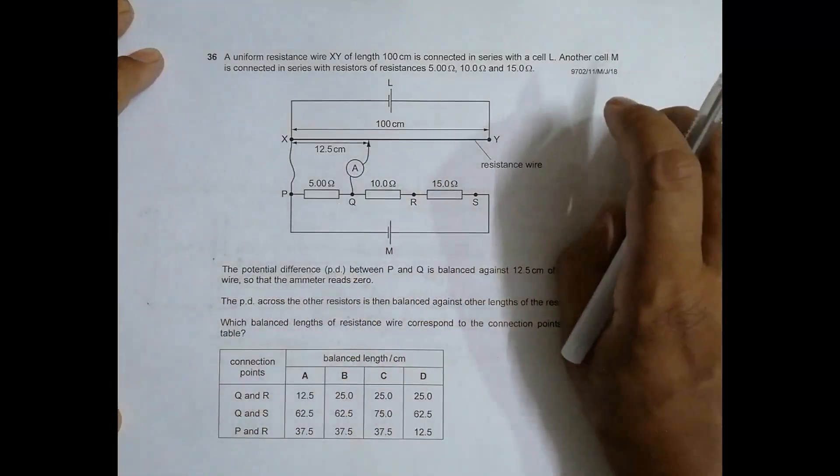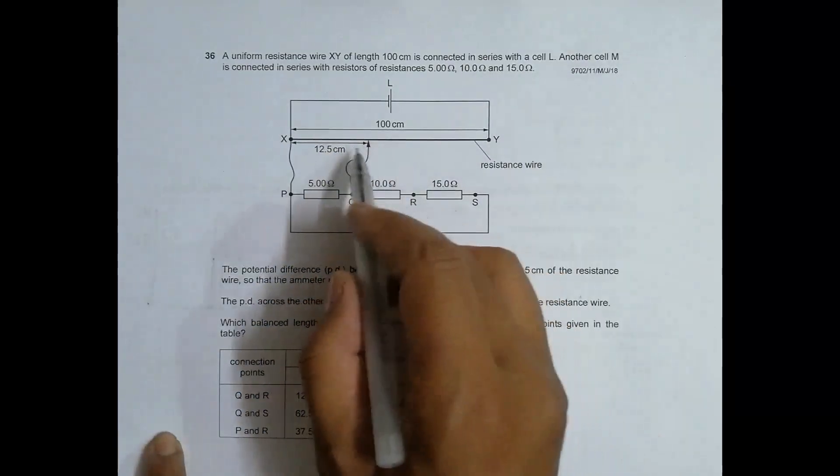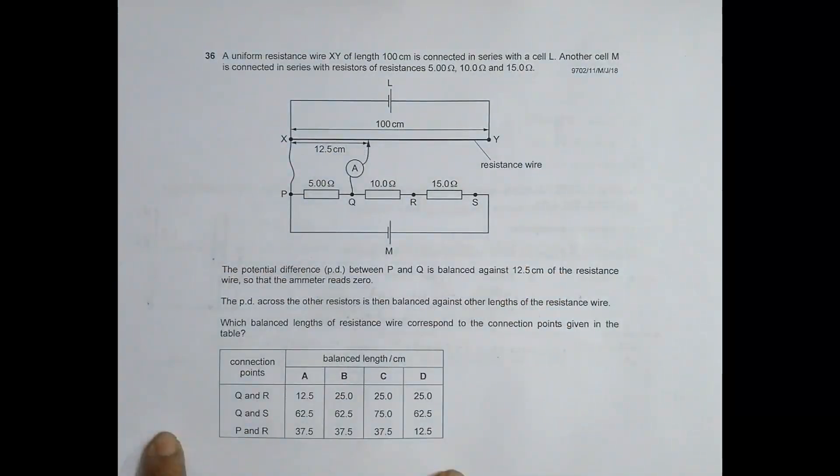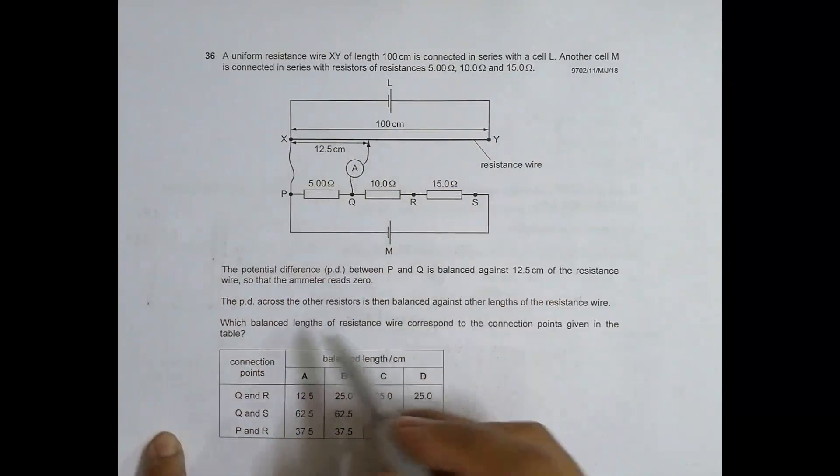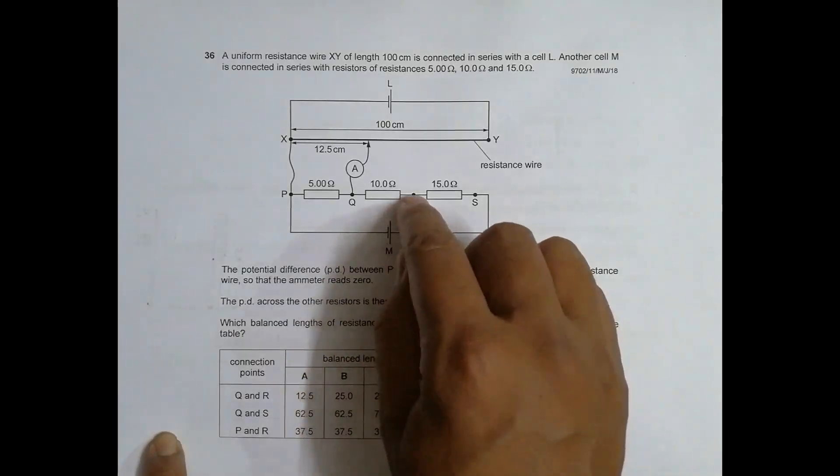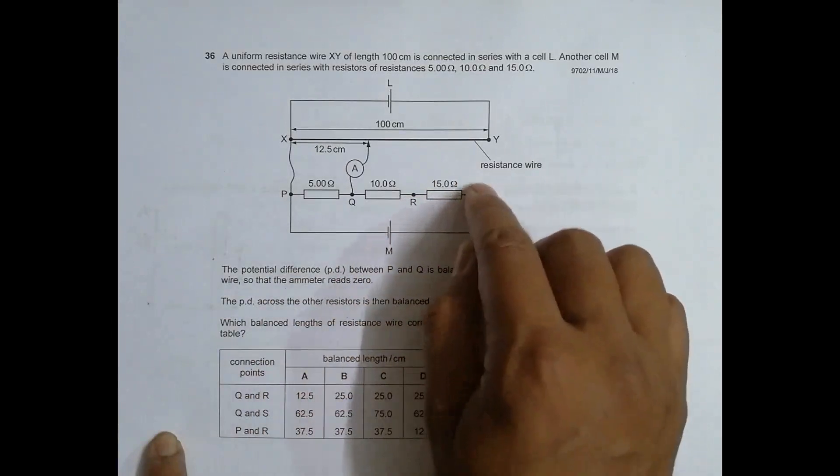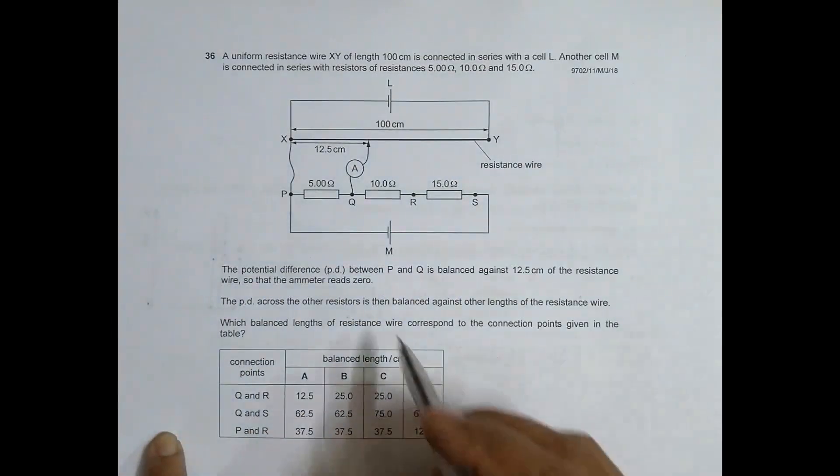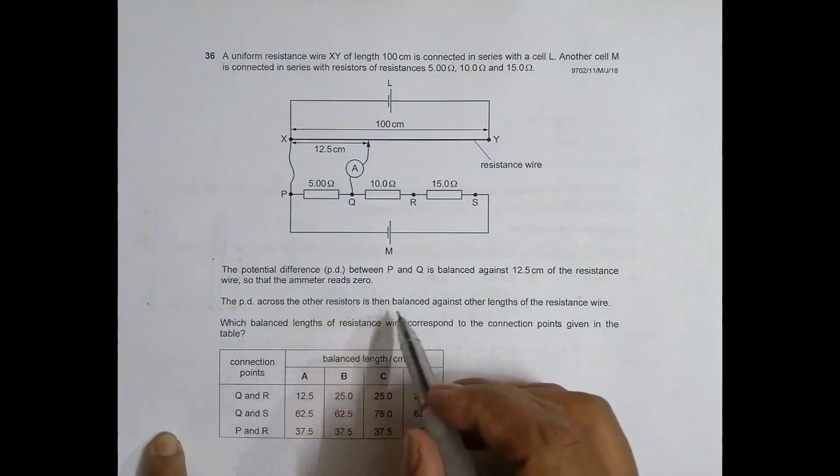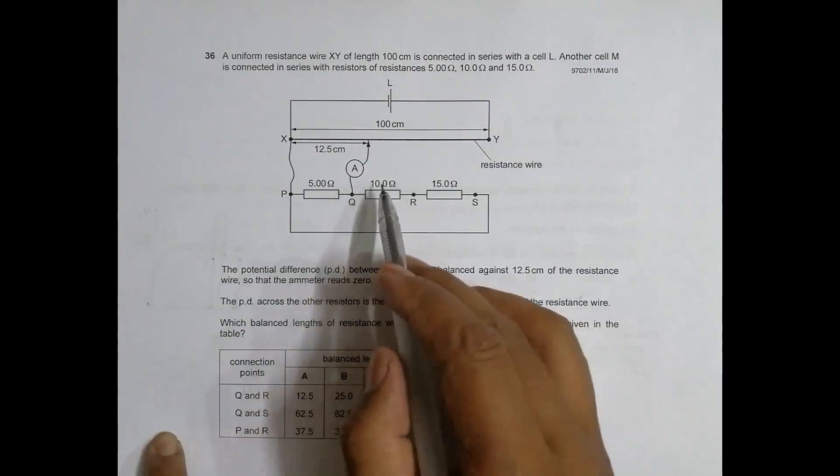The emitter is zero at this point, so that means when we arrange the links like this it balances at 12.5 centimeters. The potentiometer here, the PD across other resistors, we will use a wire over here and try to obtain balance points.